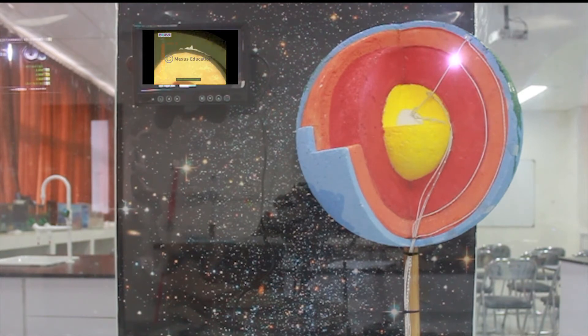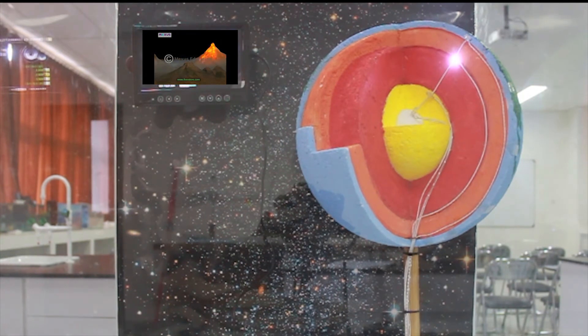The upper layer of the mantle is called the asthenosphere. The hot magma from the asthenosphere travels to the surface of the Earth, and it escapes as lava from volcanoes.